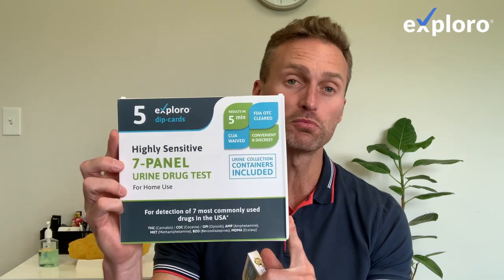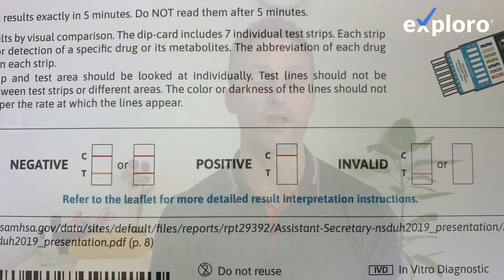Hi, it's Dr. Nussi, Certified Medical Examiner with Exploro, and in this video I'm going to explain how to interpret home drug testing results, and most importantly, what does it mean if you get a faint pink line. And this explanation will be true if you are doing a test that tests for multiple drugs, or if you are doing a specific test like this one for THC marijuana.